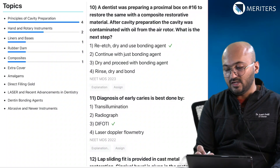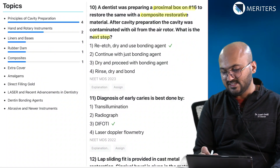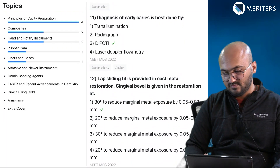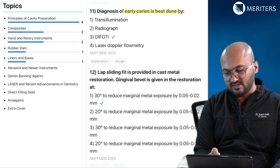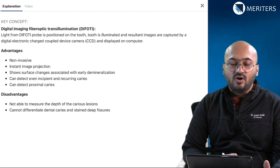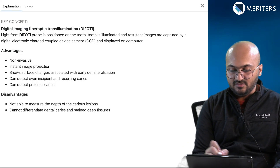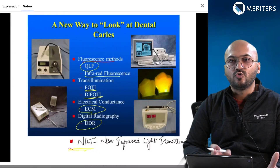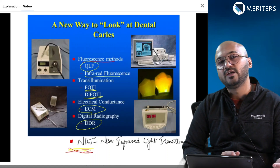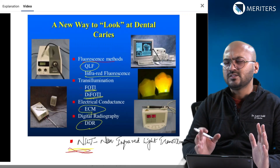In the E2023 exam there was a second question on beveling — beveling should be given for amalgam at the cavosurface angle gingivally. Then a dentist was preparing a proximal box for tooth 1.6 to restore it with composite restorative material — what is the next step? That's a composite clinical question. Diagnosis of early caries is best done by DIFOTI, which is the digital way of transillumination using fiber optics for caries detection. You can also watch the video explanation to gain parallel knowledge and learn how to eliminate options.